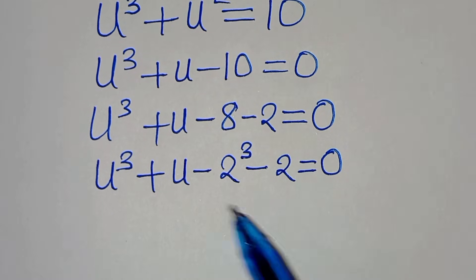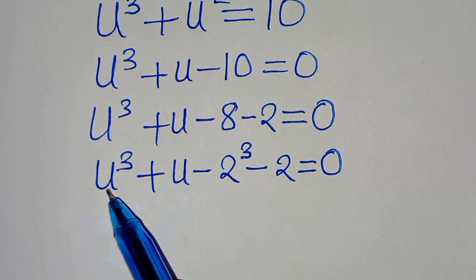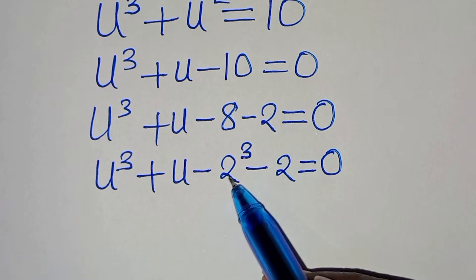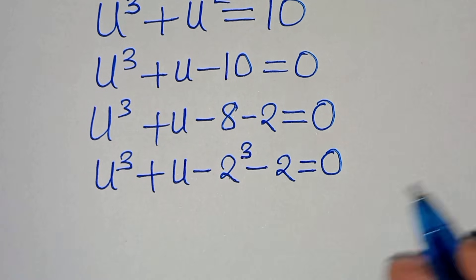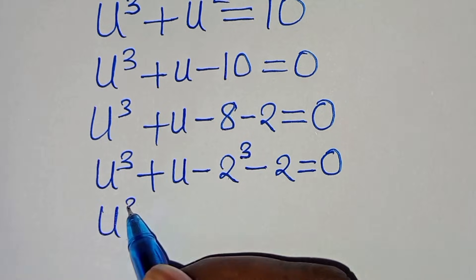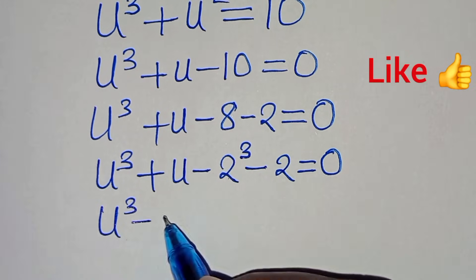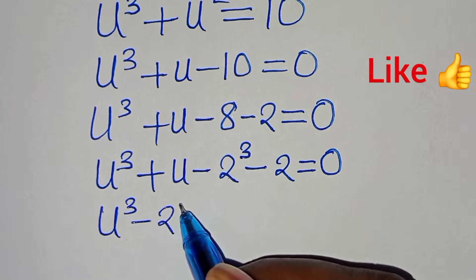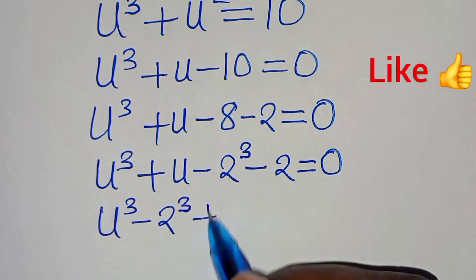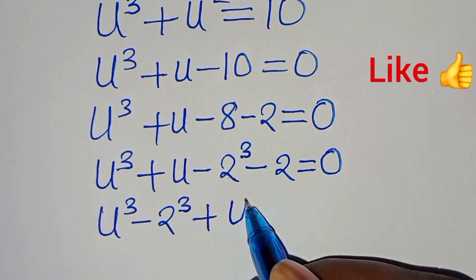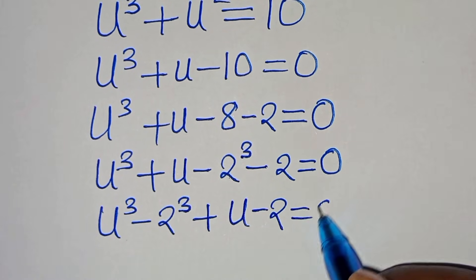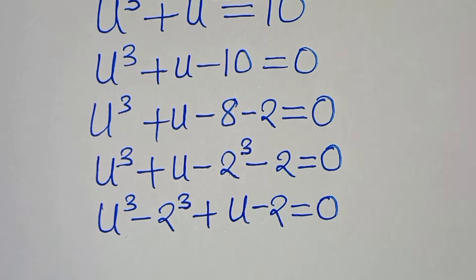Now this implies that we have u to the power of 3 and 2 to the power of 3 here, so we can express this as u to the power of 3 minus 2 to the power of 3, then plus u minus 2, and this is equal to 0.